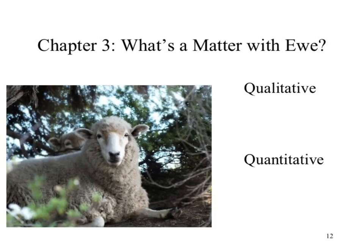Chapter 3 is pretty much looking at matter — what is matter and all that kind of fun stuff. When we're looking at matter and science in general, our observations typically get categorized into two sections: qualitative and quantitative observations.